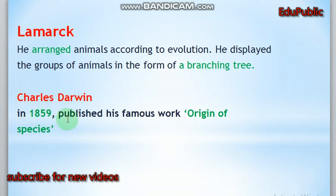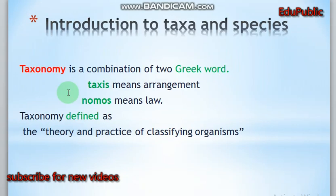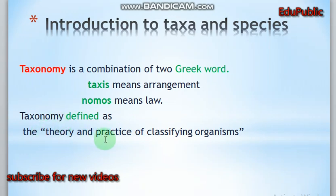Charles Darwin in 1859 published his famous work named 'Origin of Species.' The word taxonomy is a combination of two Greek words: 'taxis' meaning arrangement, and 'nomos' meaning laws. So taxonomy can be defined as the theory and practice of classifying organisms.